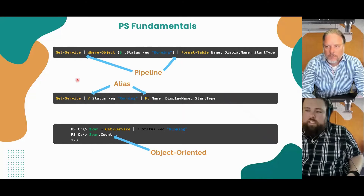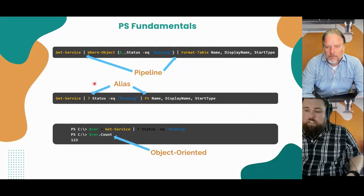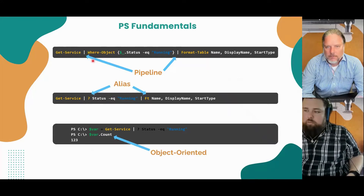The next line is quite a bit shorter, but it's really the same command. The only difference is we're using what they call an alias in PowerShell — a shorter version of the commandlet. For example, the question mark represents 'where-object' and 'ft' represents 'format-table'. That allows us to write code a little quicker, a little simpler, a little cleaner.